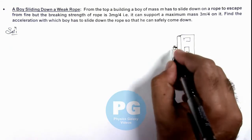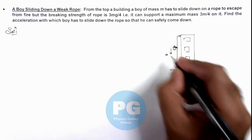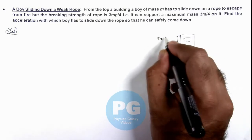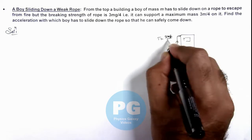We can say if the boy is sliding down with an acceleration a, it should be such that the tension in the rope is equal to maximum of 3mg/4.